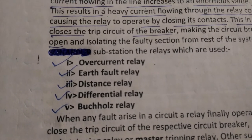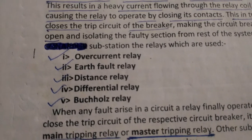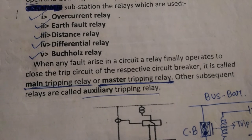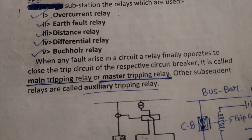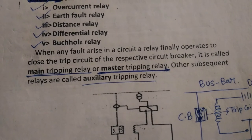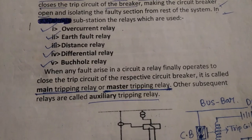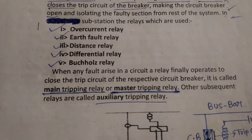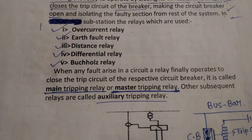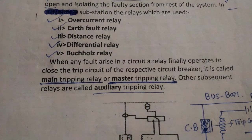The Buchholz relay is used on transformers, and the auxiliary relay coil is attached to the back side of the panel. When any fault arises in the circuit, the relay operates to close the trip circuit of the circuit breaker — this is called the main tripping relay or master tripping relay. Other subsequent relays are called auxiliary tripping relays. The master trip relay is the 86 relay, and it is parallelly connected with all other relays: overcurrent, earth fault, distance protection, differential protection, OTI, WTI, alarm trip, PRV, OSR trip — everything is connected to the 86 relay.